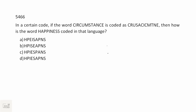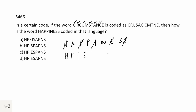One more from coding-decoding. On the Green platform, at least three coding-decoding questions you might encounter. In a certain code, CIRCUMSTANCE is coded as something — how is HAPPINESS coded? H-A-P-P-I-N-E-S-S. We can see odd-even positioning is being used. So we will have H-P-I-E-S from the odd positions, then the remaining letters A-P-N-S, giving us H-P-I-E-S-A-P-N-S, which we have in option D.